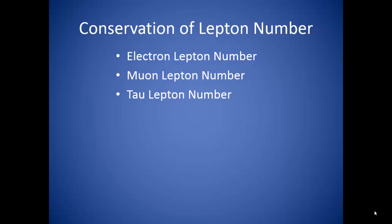The second conservation law having to do with particle interactions is the conservation of lepton number. Leptons, remember, along with quarks, are considered to be the basic building blocks of matter and are often referred to as the elementary particles. According to the law of conservation of lepton numbers, each particle is assigned a lepton number. This is a bit more complicated because there is a separate requirement for each of the different types of leptons. So each particle is actually assigned an electron lepton number, a muon lepton number, and a tau lepton number.